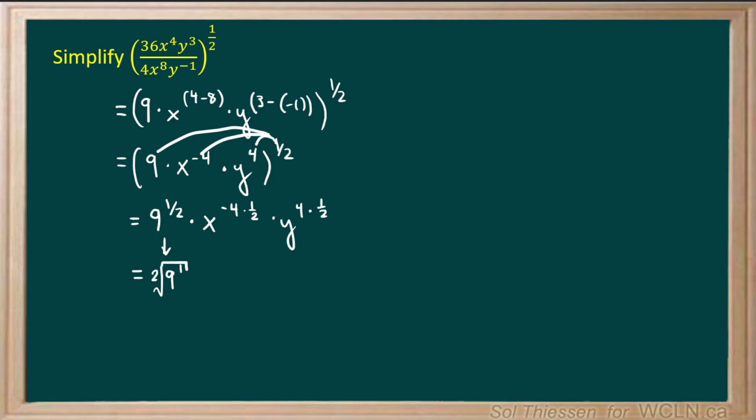Now negative 4 times 1 half is equal to negative 2, so we'll have x to the power of negative 2. And 4 times a half is simply 2, so we'll have y to the power of 2.